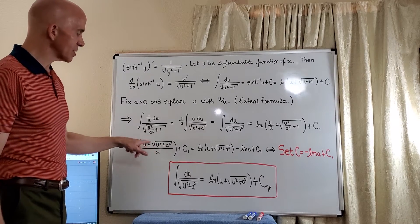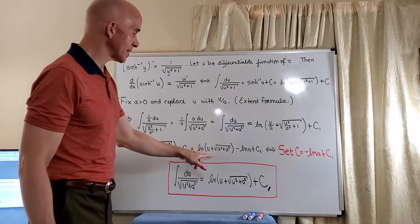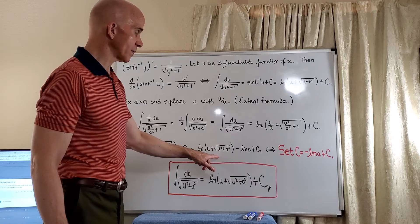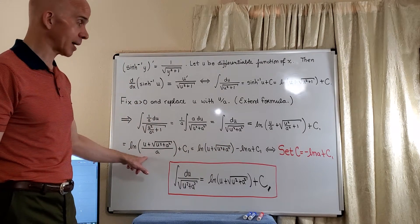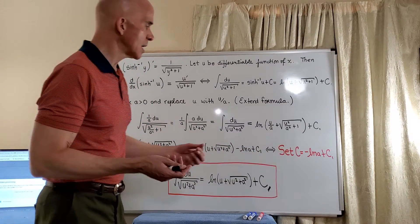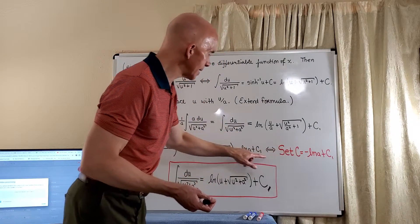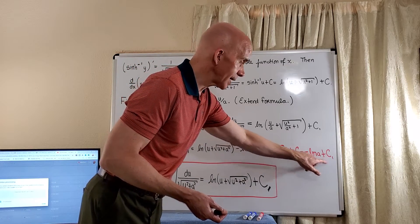Now what we can do is apply the quotient rule for logarithms. So this will be the natural log of u plus the square root of u squared plus a squared minus the natural log of a plus c1. And now of course we want to make our formulas look nice. So we're going to set c to be this term, this constant. The negative logarithm of a plus c1.